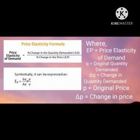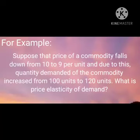Where EP stands for Price Elasticity of Demand, Q equals original quantity demanded, ΔQ equals change in quantity demanded, P equals original price, and ΔP equals change in price.